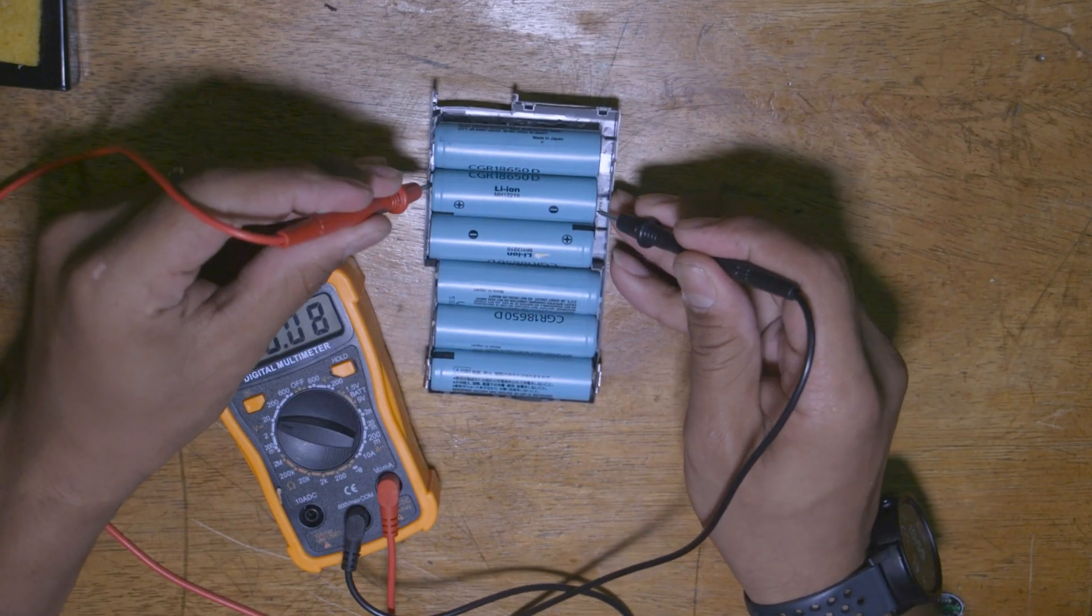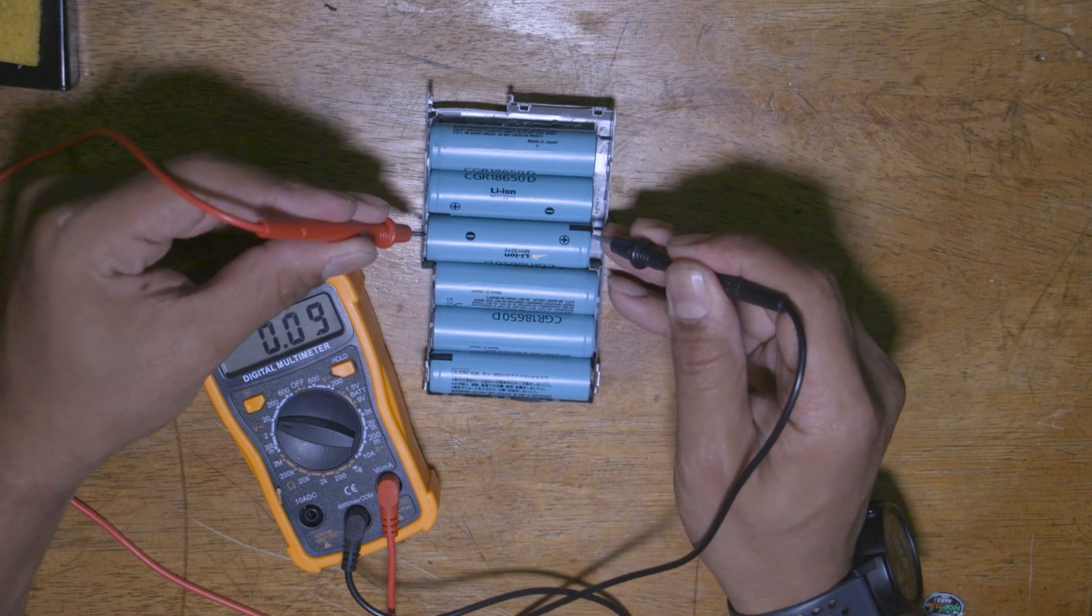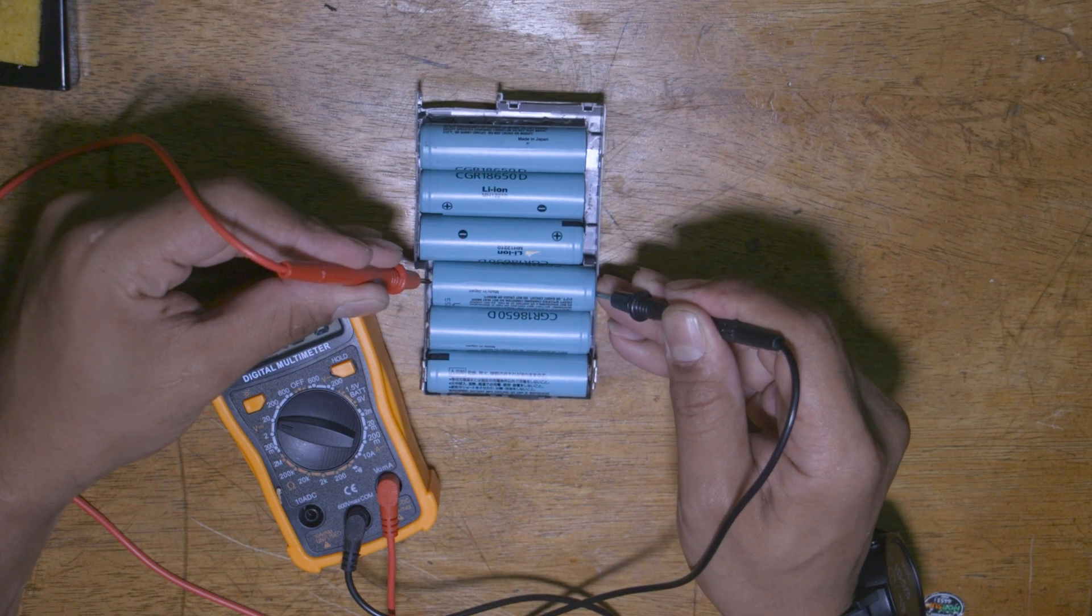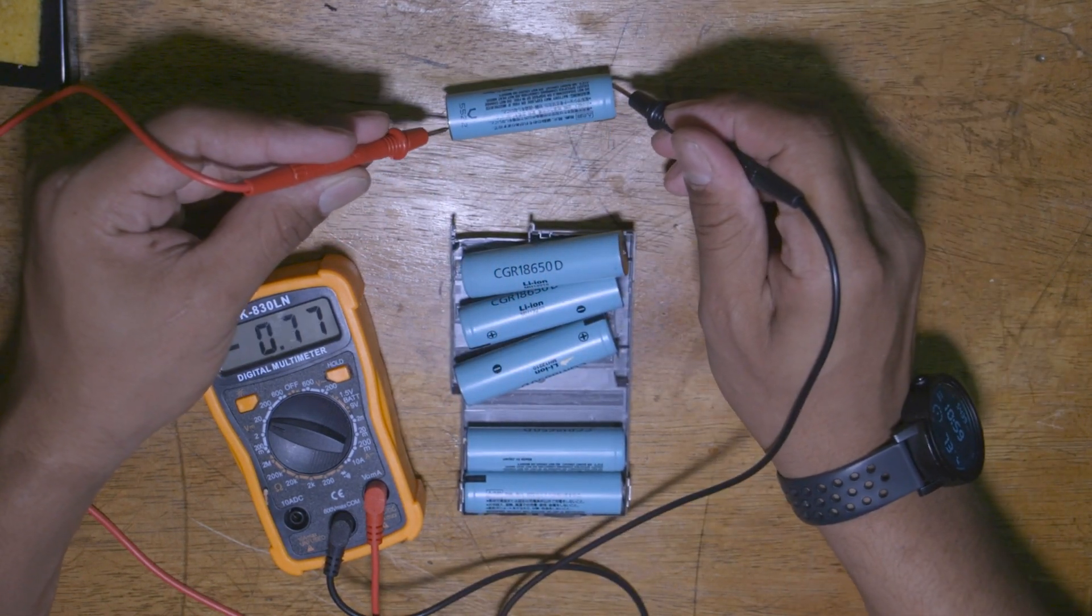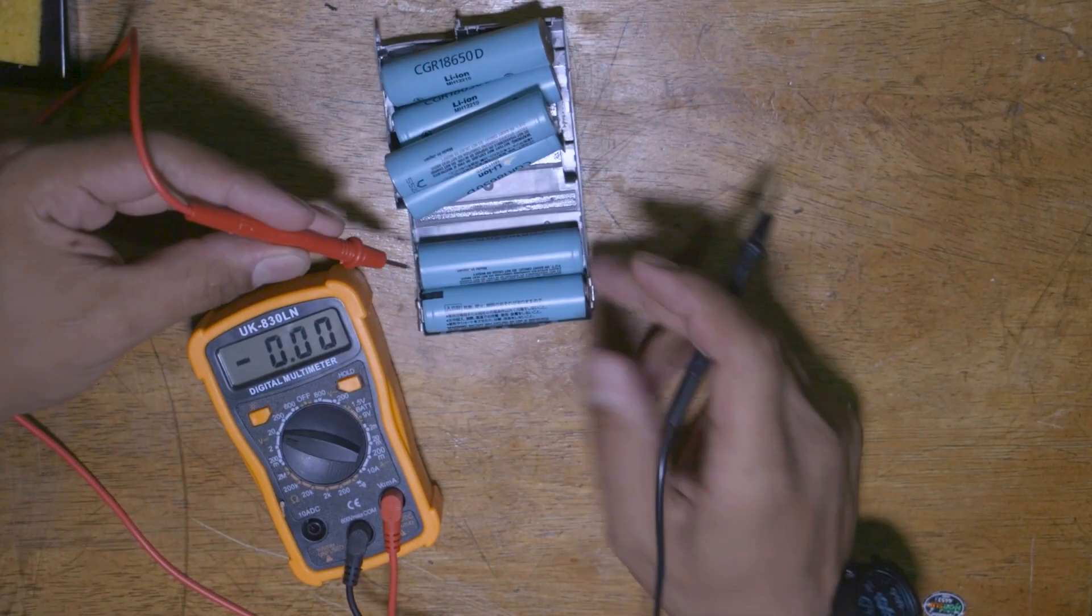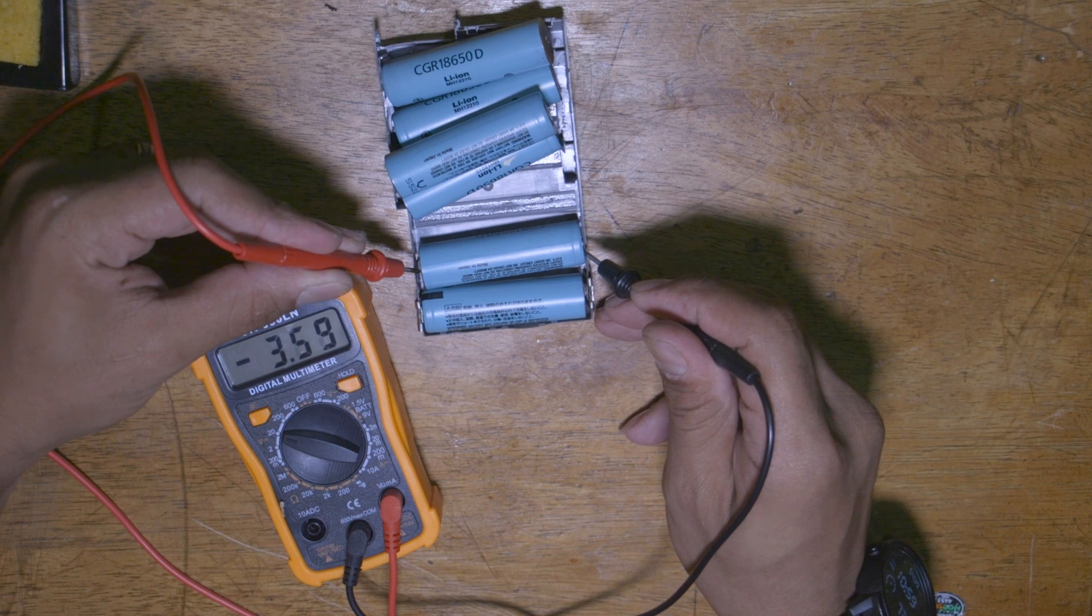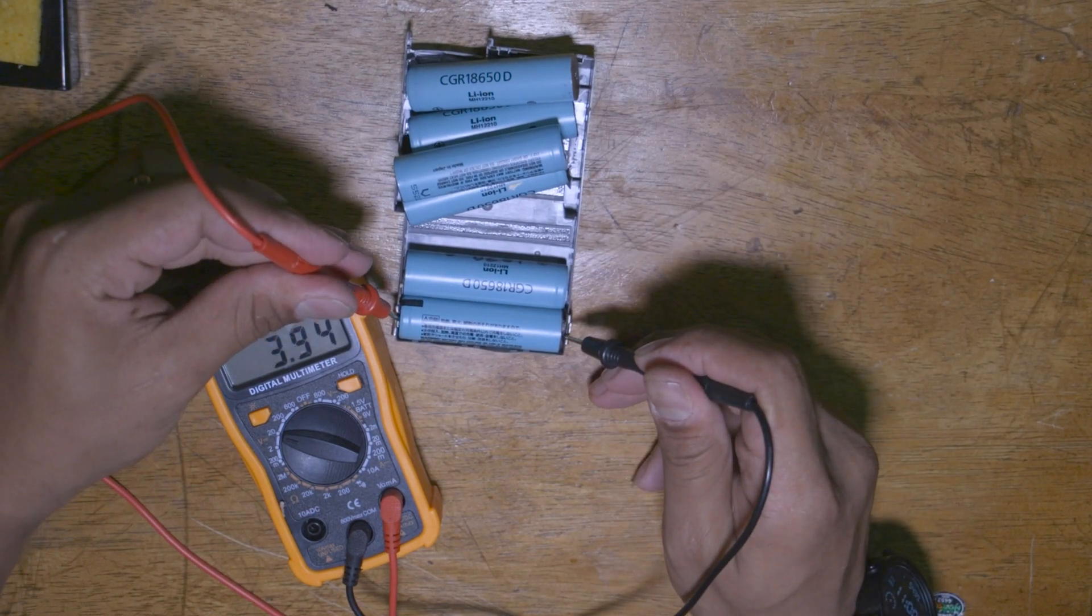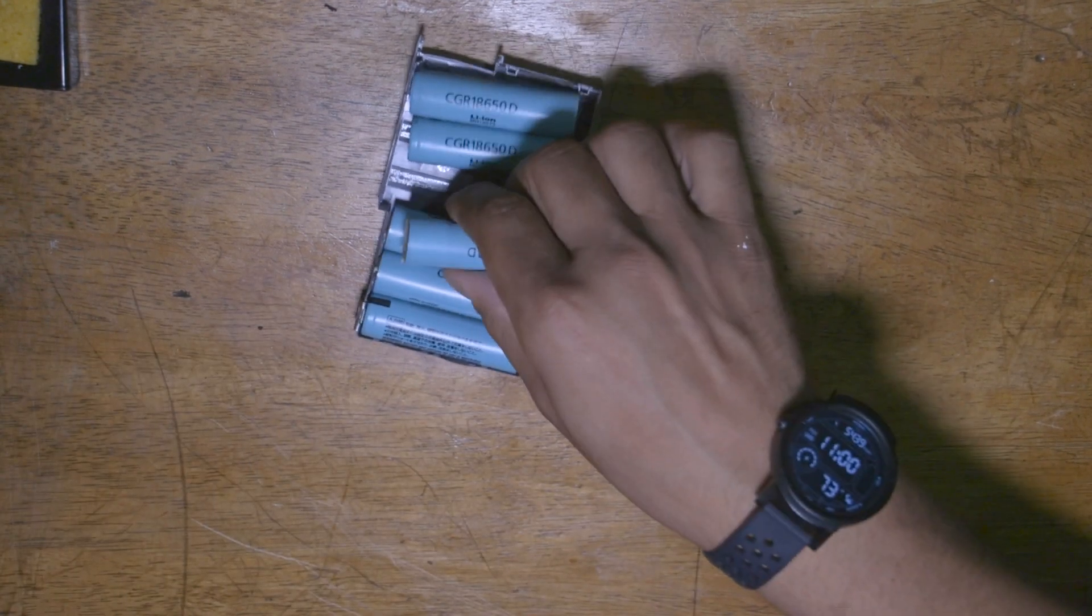So for example this one, 4.14, 4.14, 4.13. This one says zero. Oh no we're good, 4.11. 3.6. Oh this is the one that I already discharged. And 4.15. All right so that's the first thing you need to do. Make sure they're charged before you discharge them of course.